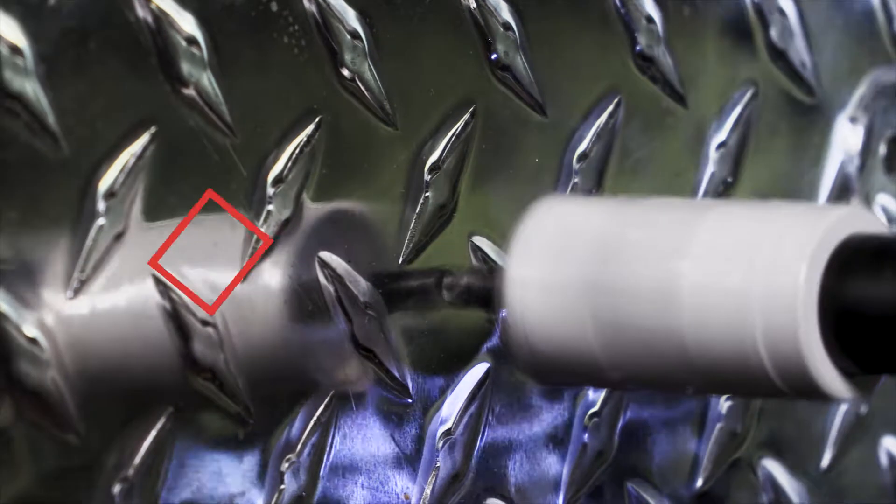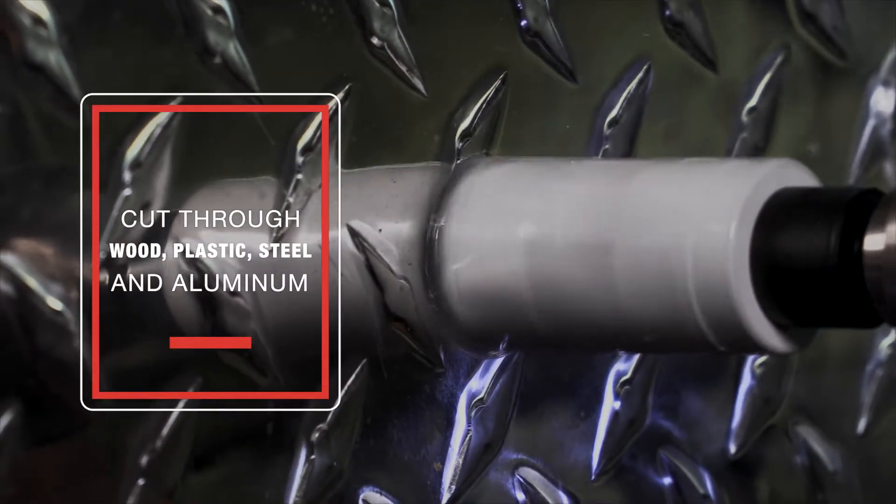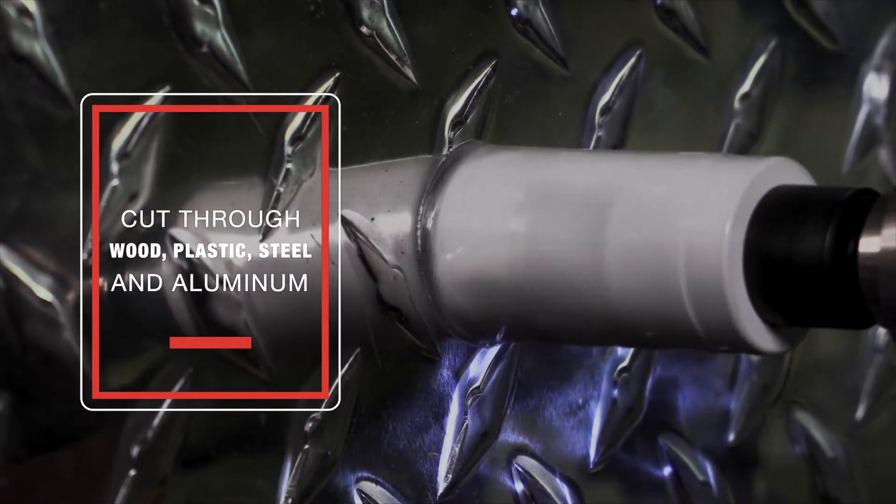These hole saws are designed to cut through materials such as plastic, wood, steel, plywood, and aluminum.